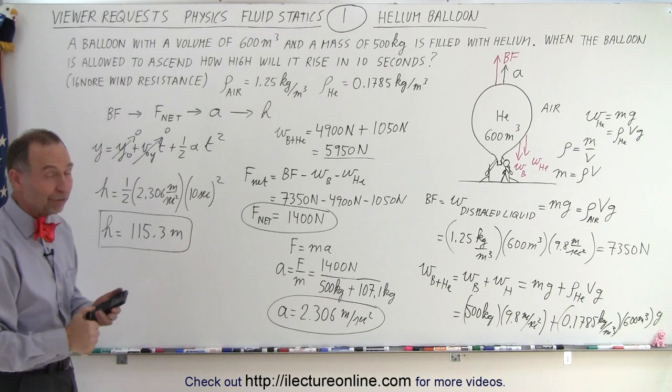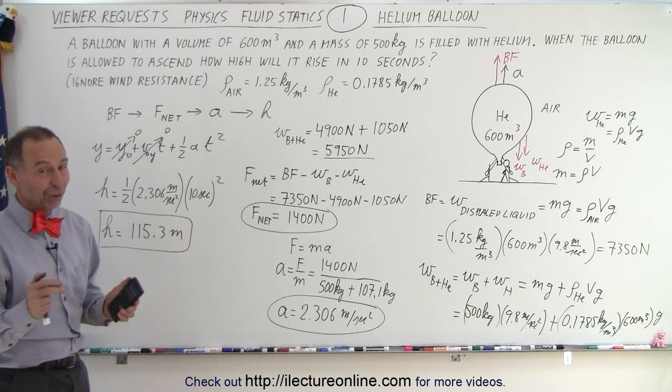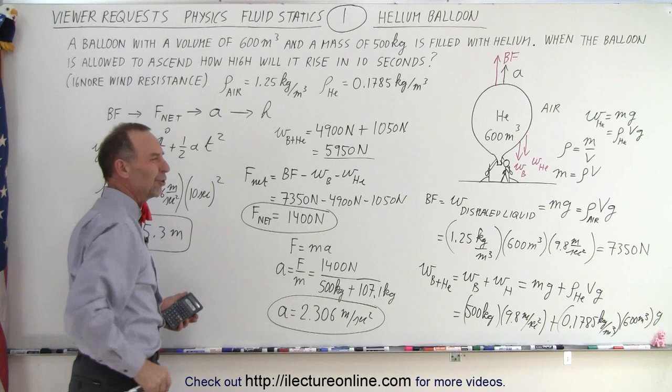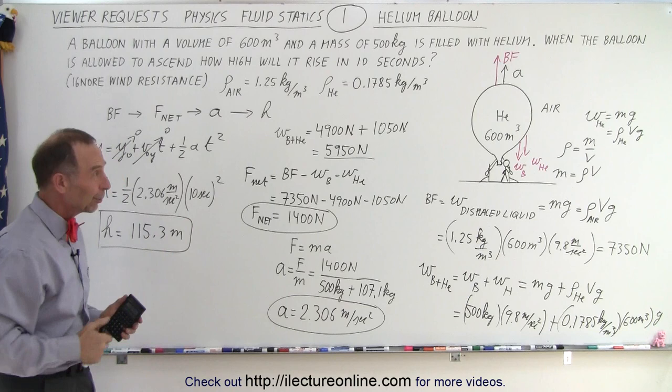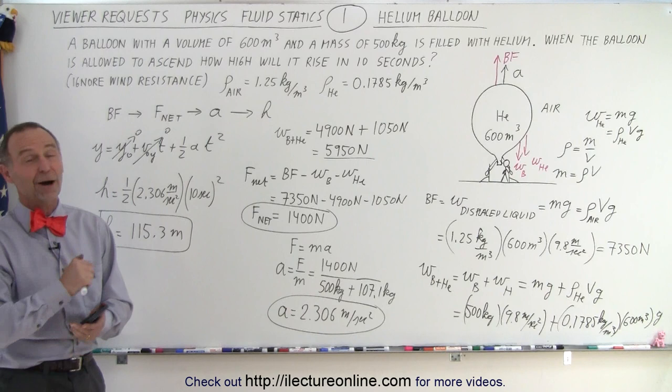So assuming there's no air resistance — which of course is never the case, but if it was — the balloon will reach a height of 115.3 meters in just 10 seconds. That's quite a height. The original numbers given had a volume of 6,000 cubic meters, which would make the balloon shoot up like a rocket. So I looked up correct values for density of air and helium and used a more reasonable balloon size to get a sensible result. If you want to use different numbers, just plug them in and work it out the same way.